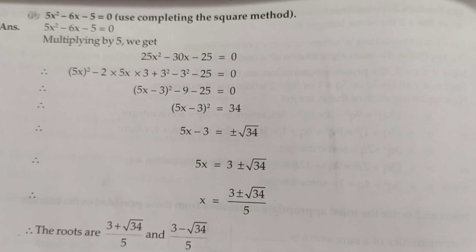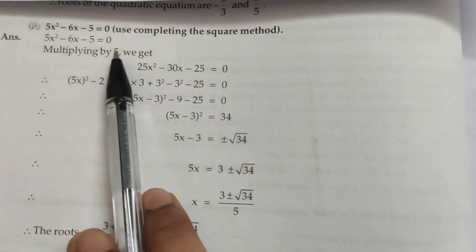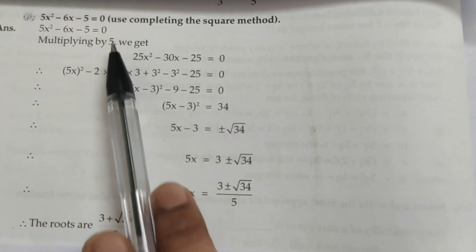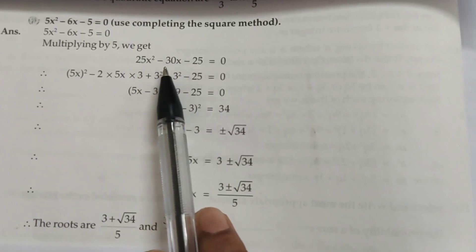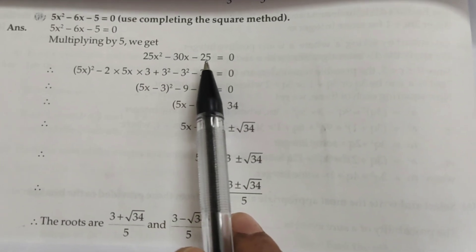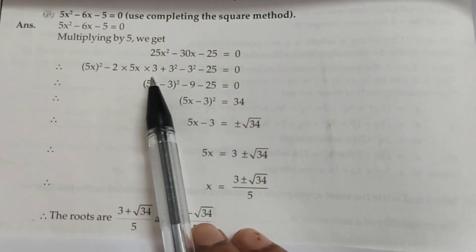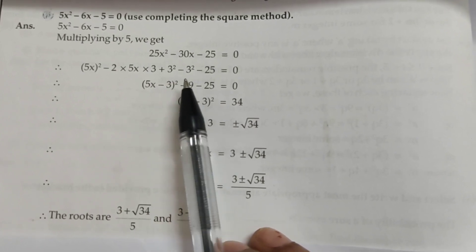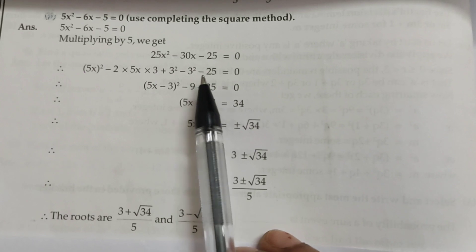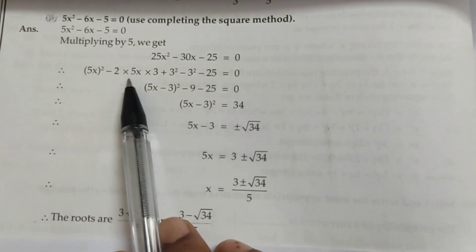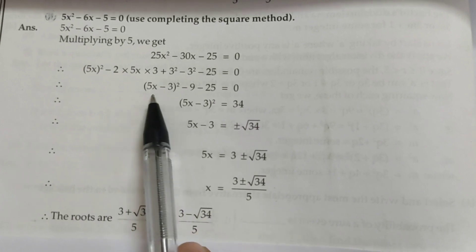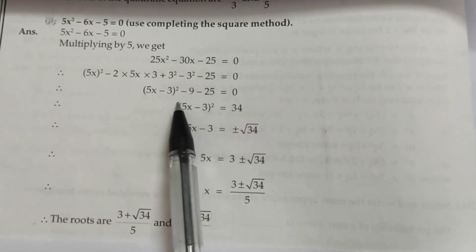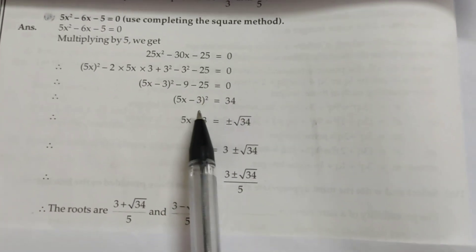5x² - 6x - 5 = 0. Multiply this equation by 5, so we get 25x² - 30x - 25, which becomes 5x² - 2·(5x)·3 + 3² - 3² - 25, giving us (5x - 3)² where 3² is 9.